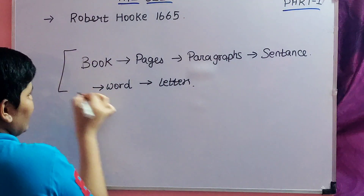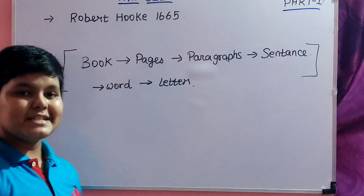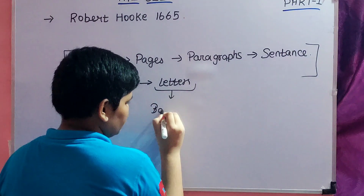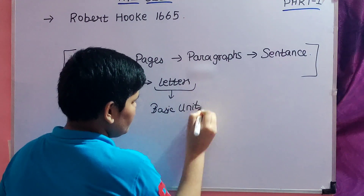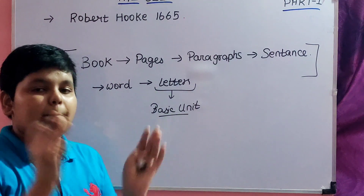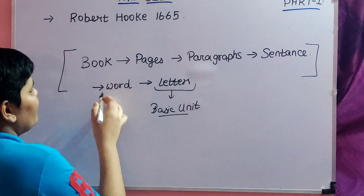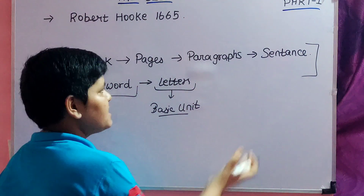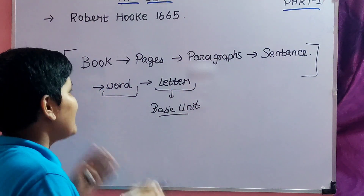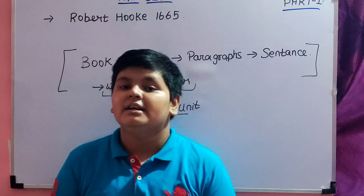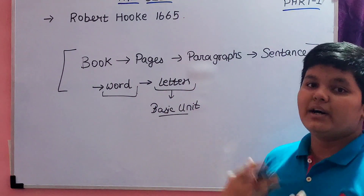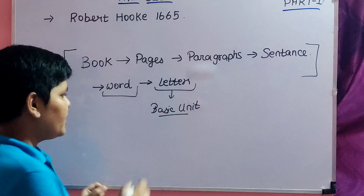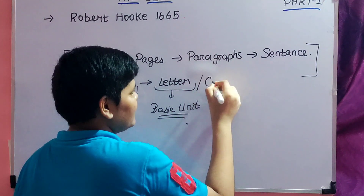This forms a chain. In this chain, letters are the basic unit. A group of letters forms a word, a group of words forms a sentence, a group of sentences forms a paragraph, a group of paragraphs forms a page, and a group of pages forms a book. Now, if you apply this example to a human body, the most basic unit is not letters — it is cells.